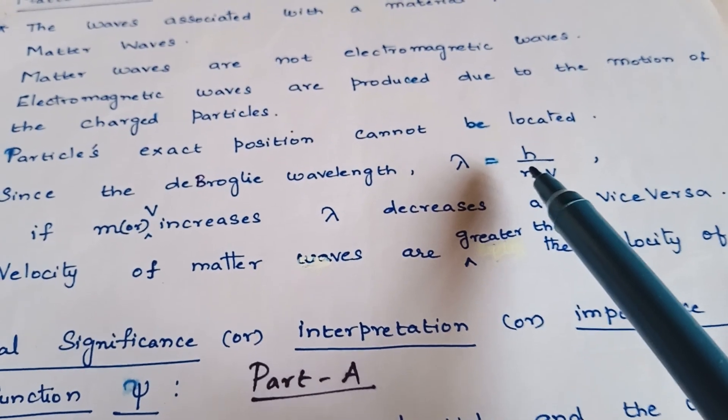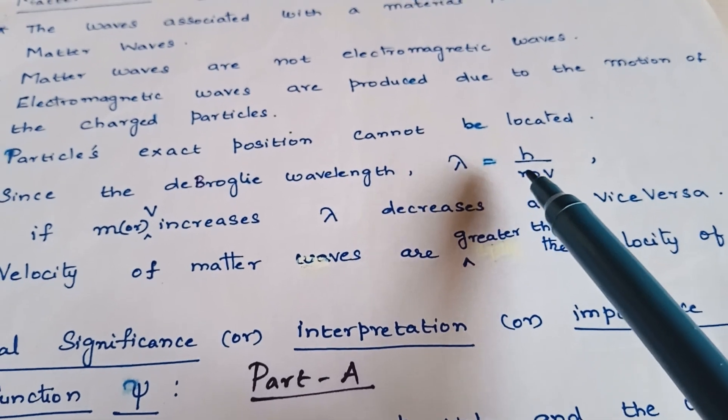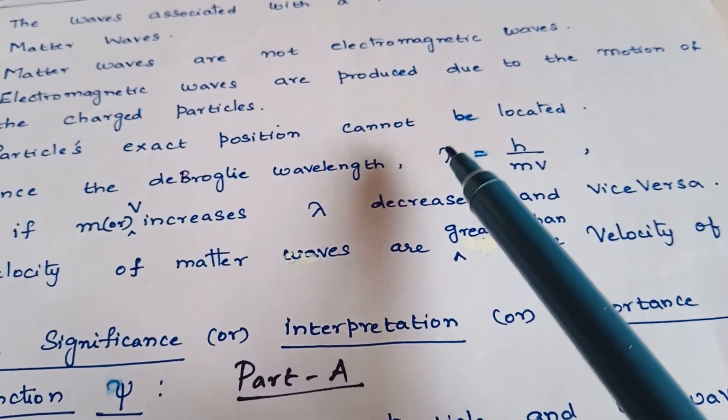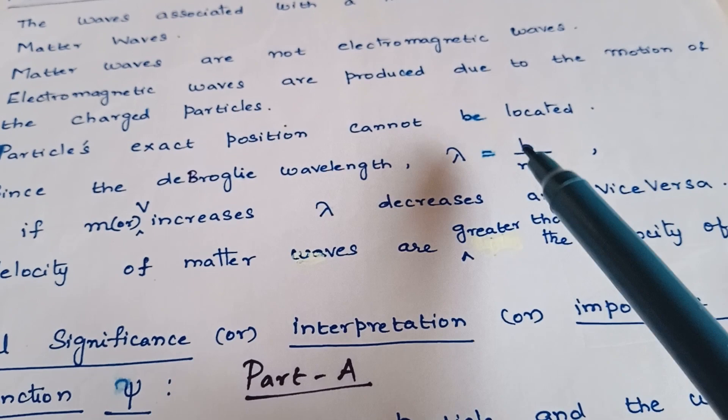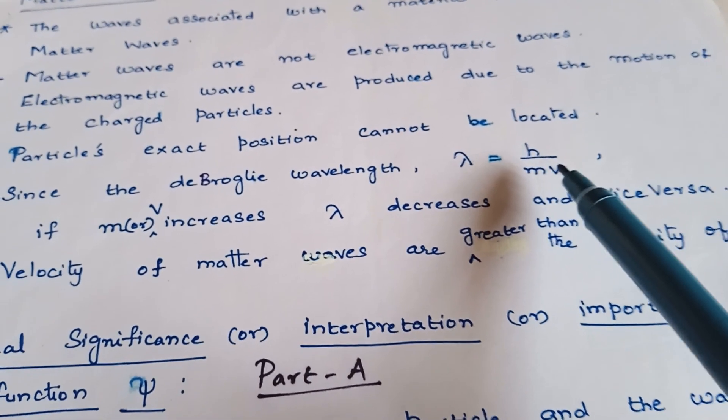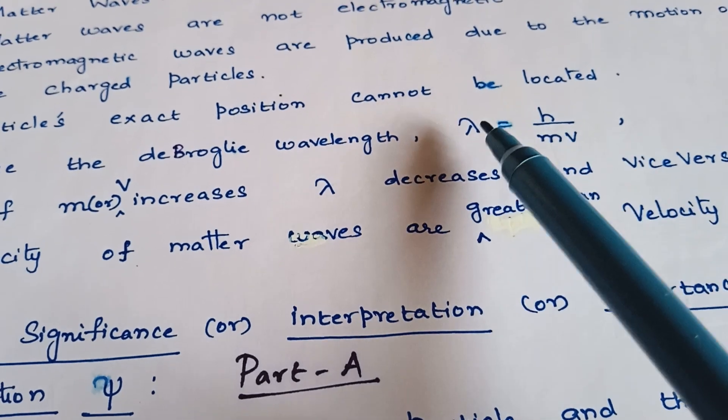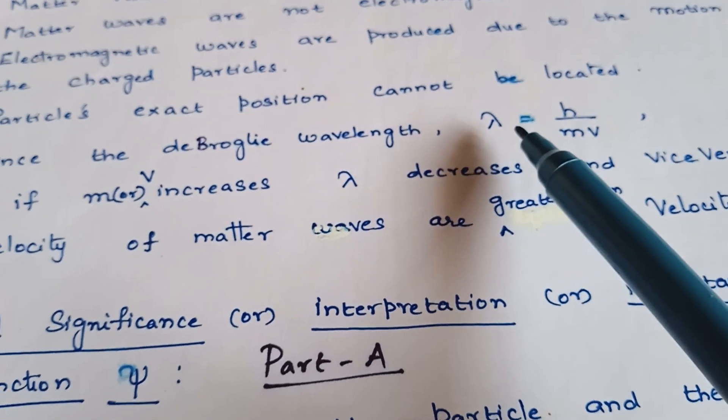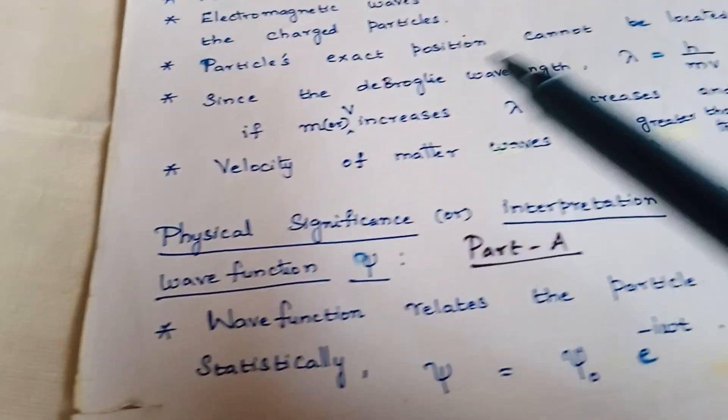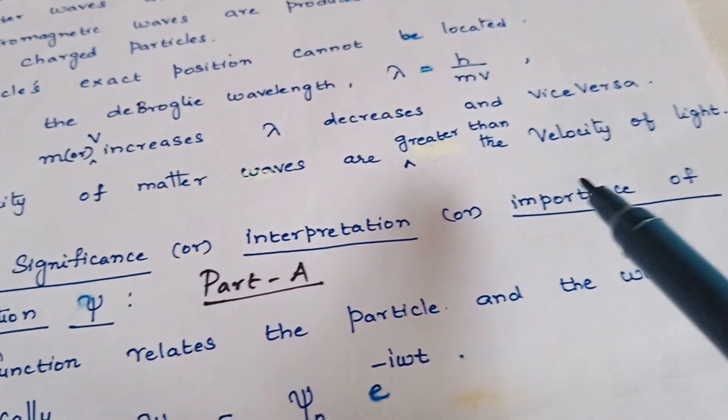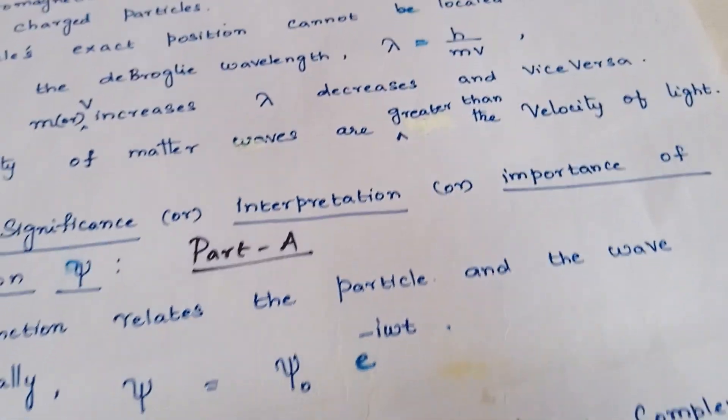Similarly, when the mass of the particle is decreasing, then lambda will be increasing. Velocity will also, if it is at a higher value, then lambda will be of a lower value and vice versa. The velocity of matter waves are greater than the velocity of light.